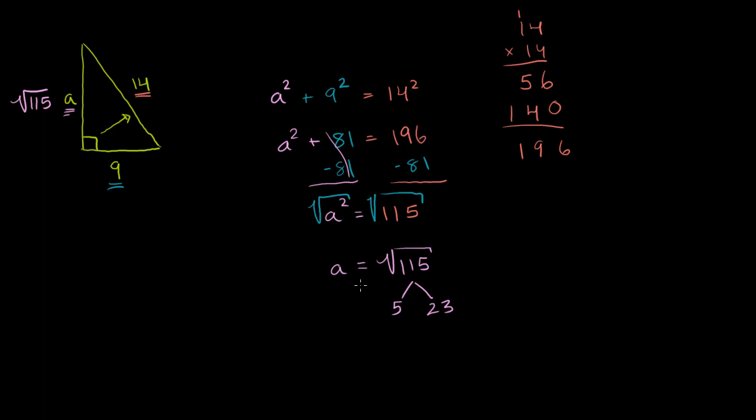Now if you want to get a sense of roughly how large the square root of 115 is, if you think about it, the square root of 100 is equal to 10. And the square root of 121 is equal to 11. So this value right here is going to be someplace in between 10 and 11, which makes sense if you think about it visually.